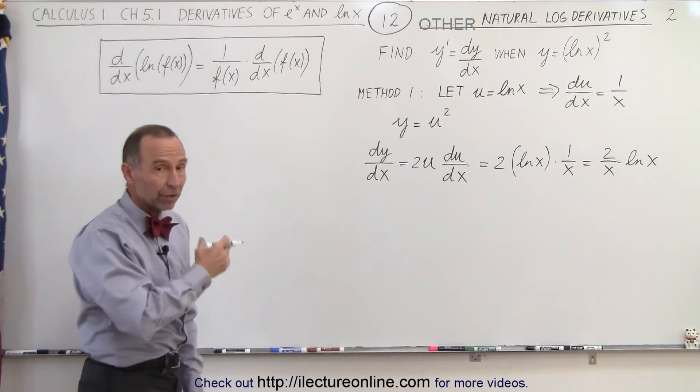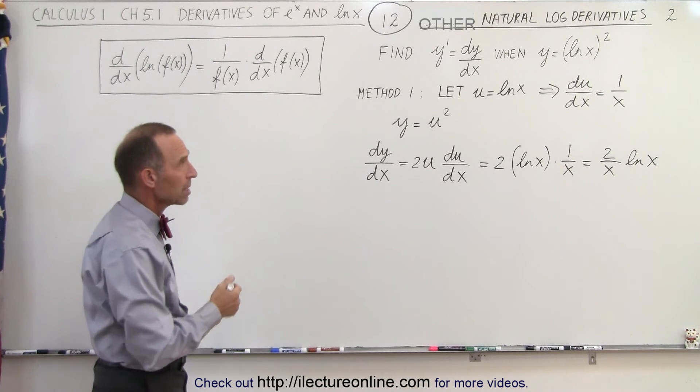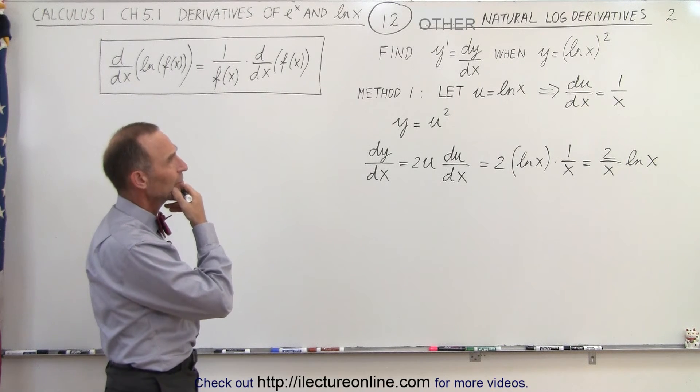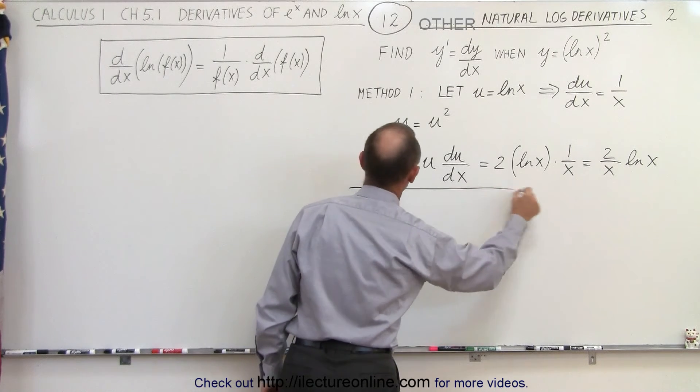Now, we could have also gone ahead and done what we call brute force straight through using what we call the chain method. So, let's try that. So again, we're going to write as method 2.